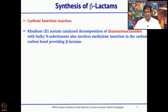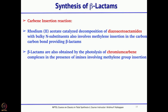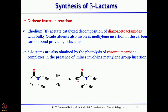Another interesting route to beta-lactams is carbene insertion. Carbenes are generally generated from diazo compounds; treatment with dirhodium tetraacetate [Rh₂(OAc)₄] generates a rhodium carbenoid in situ. This carbenoid immediately undergoes C–H insertion at the adjacent carbon to give the corresponding beta-lactam.